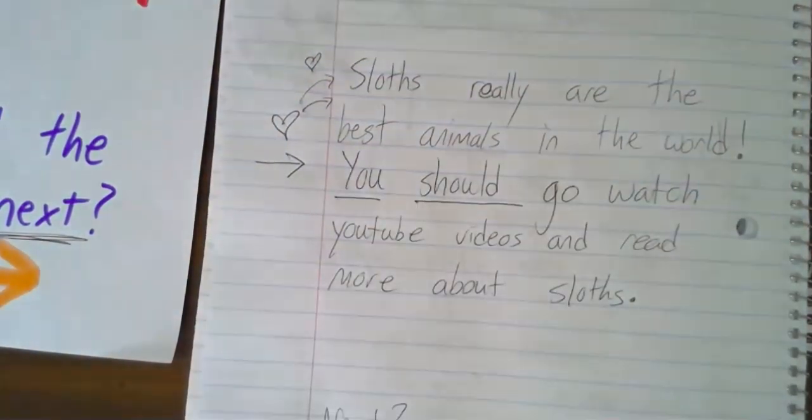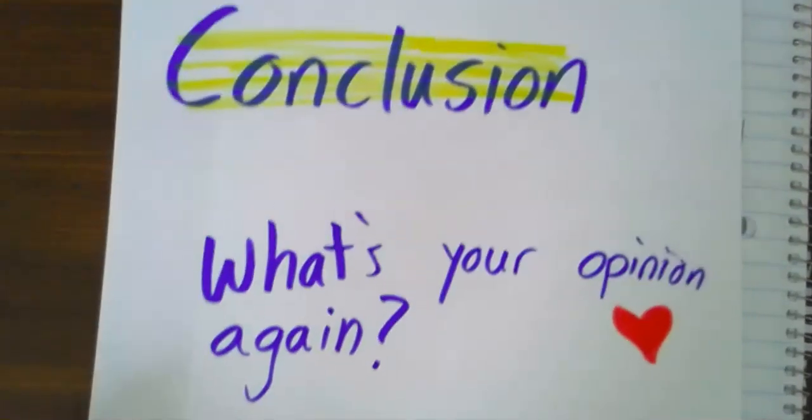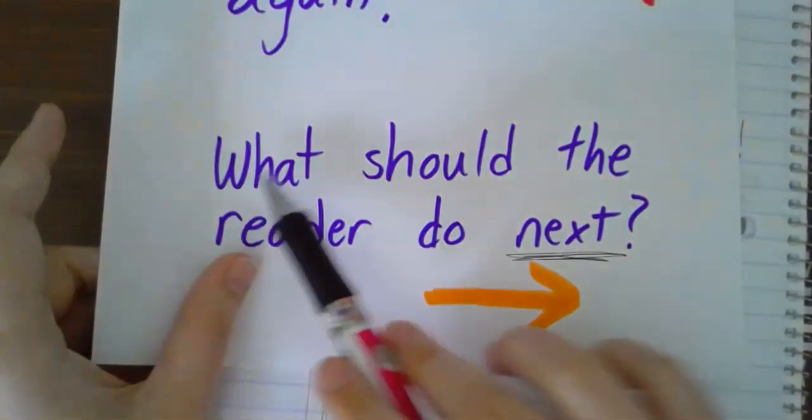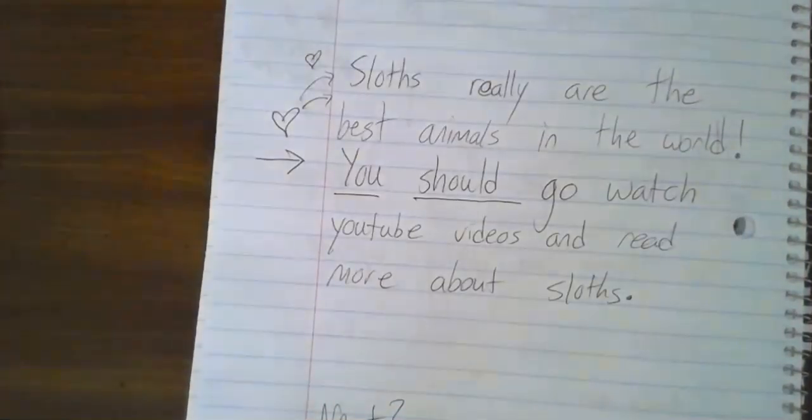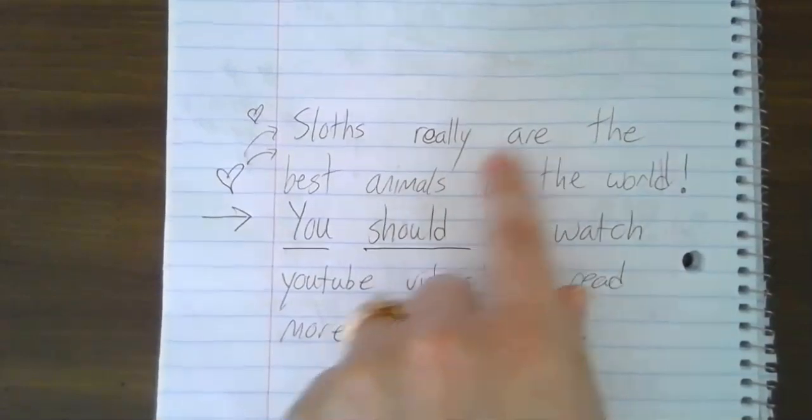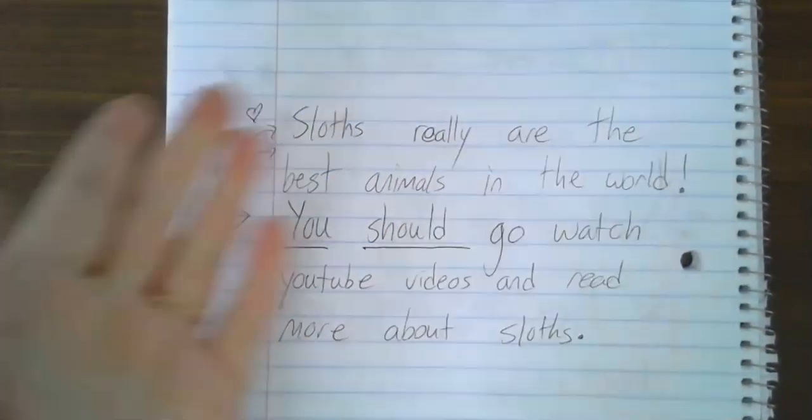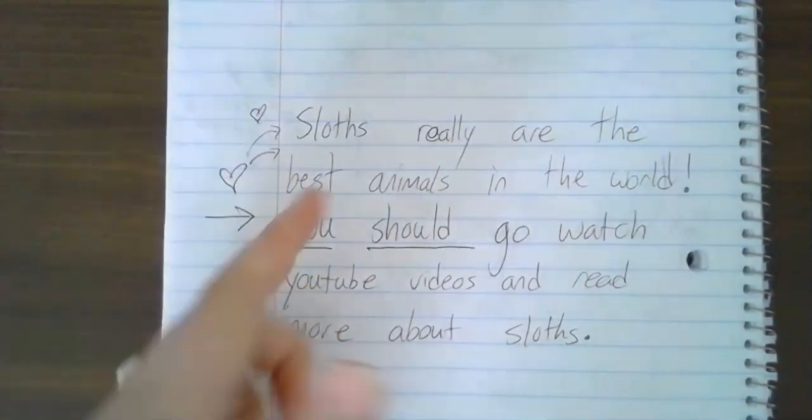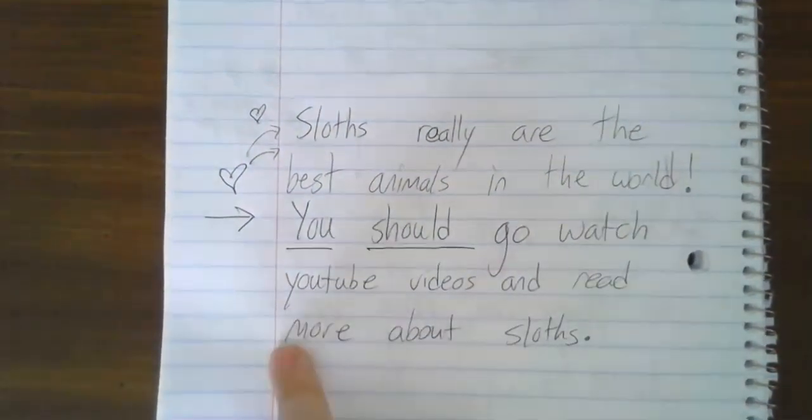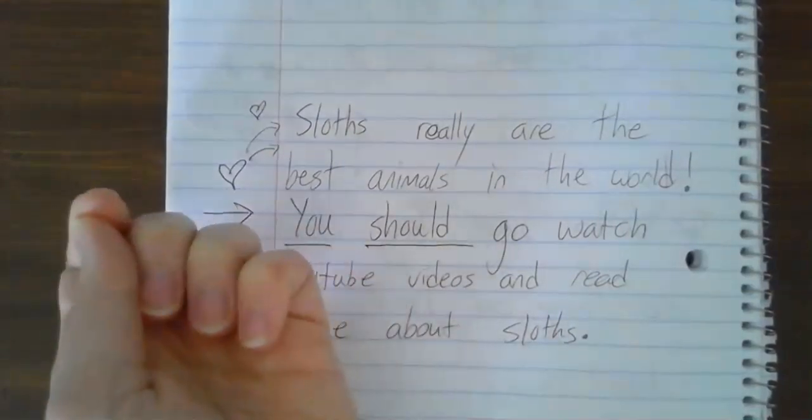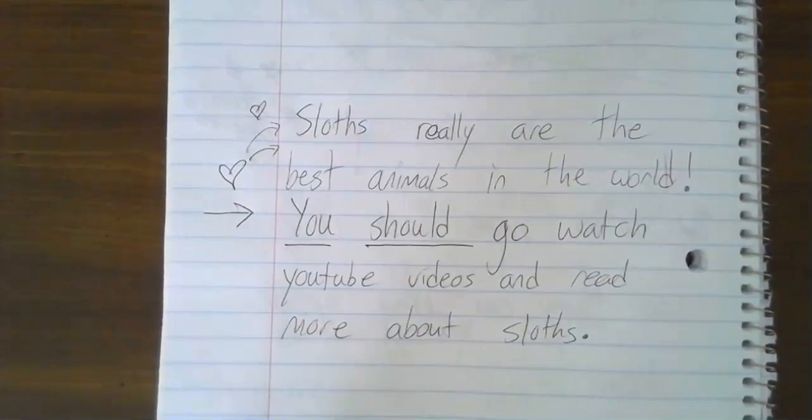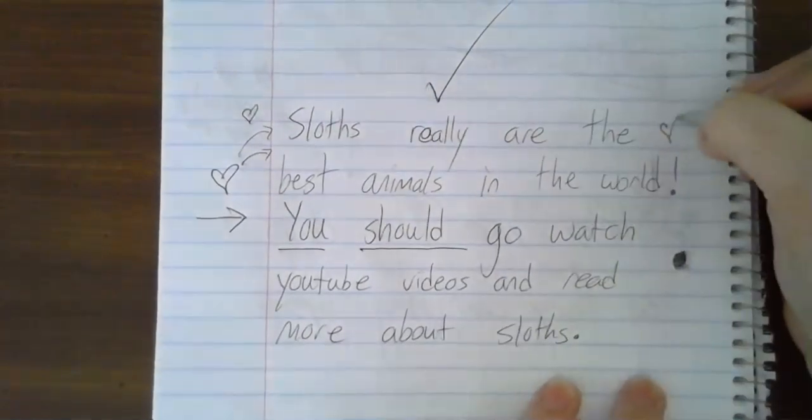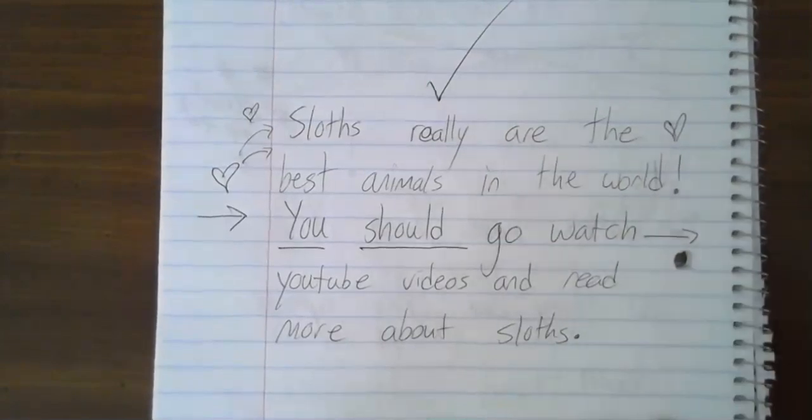Let's make sure I have my two pieces now. Again, my conclusion: What's your opinion again? And what should the reader do next? Let's make sure I have those two pieces. Sloths really are the best animals in the world. That's how I feel, right, because your animal is different. You have a different animal besides a sloth. You should go watch YouTube videos and read more about sloths. Did I tell you what you should do next? Yes I did. So guess what? My conclusion is done. I have how I feel and I have what you should do next.